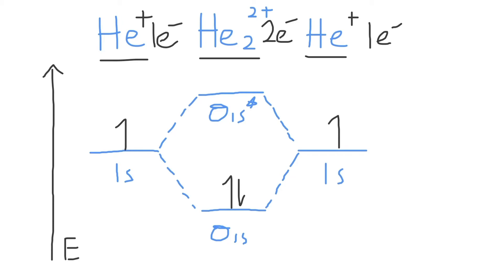Now, what is the bond order of He₂ 2+? The bond order tells us the strength of a bond and its stability, as well as the number of electron pairs involved in the bond.